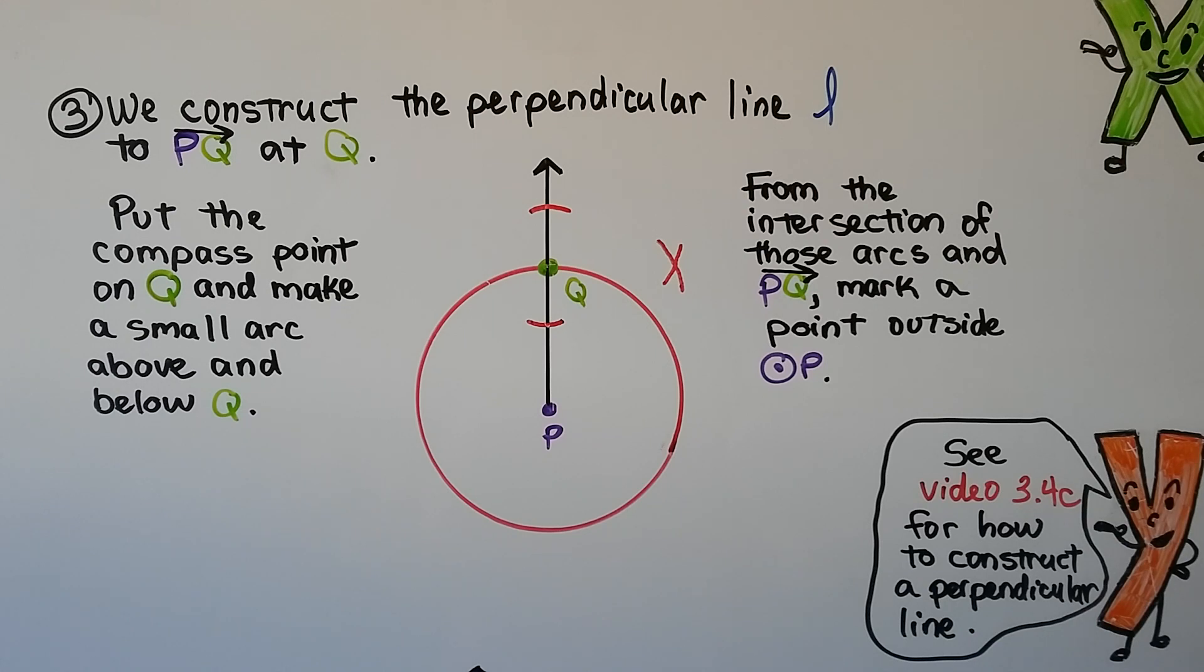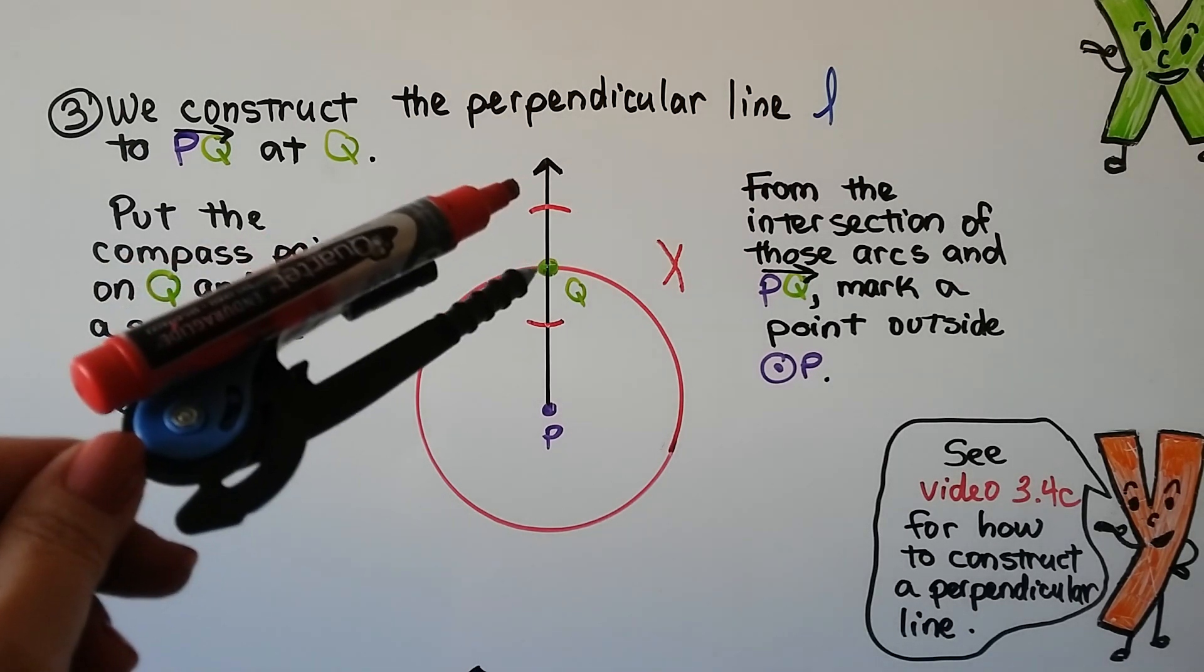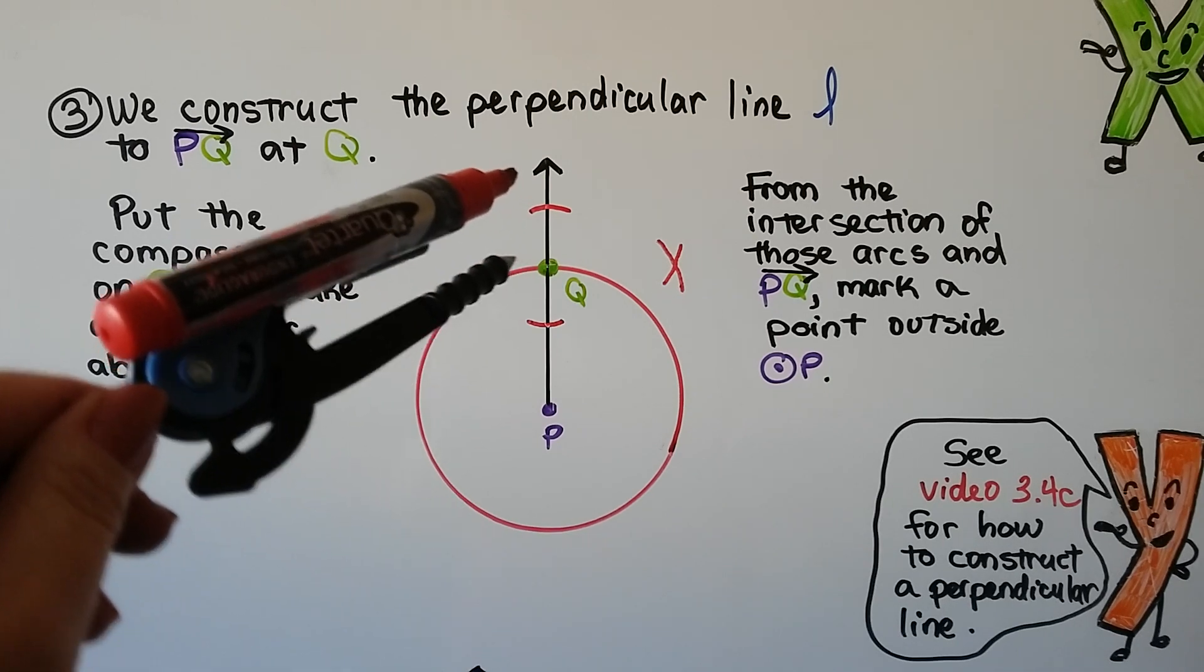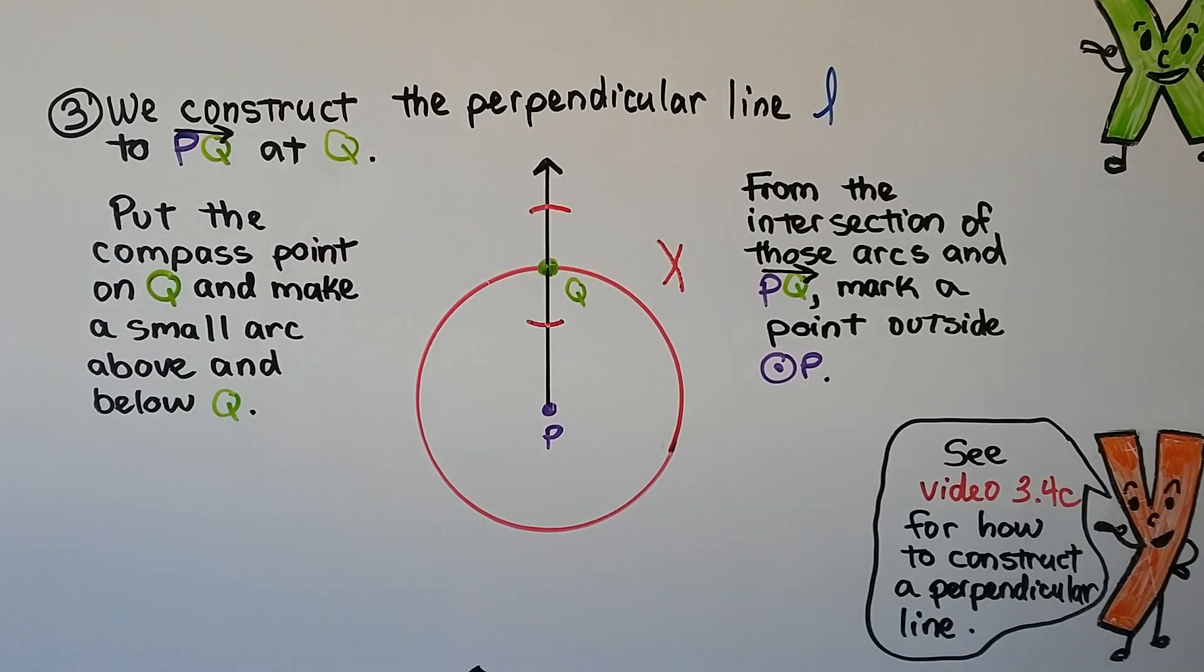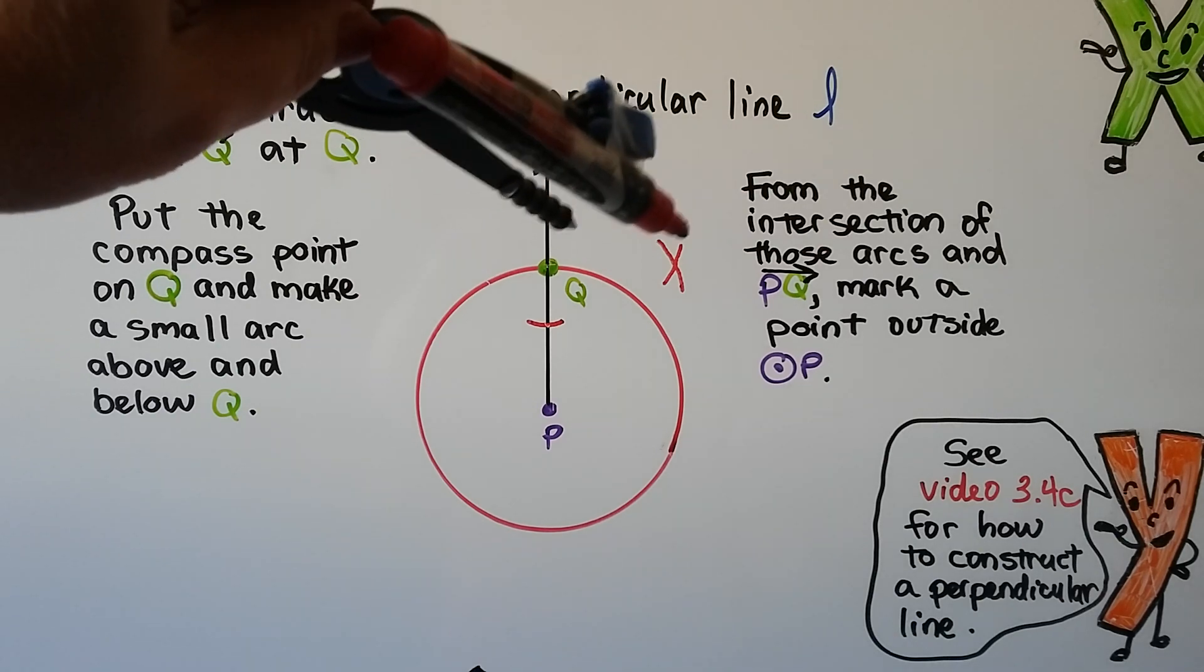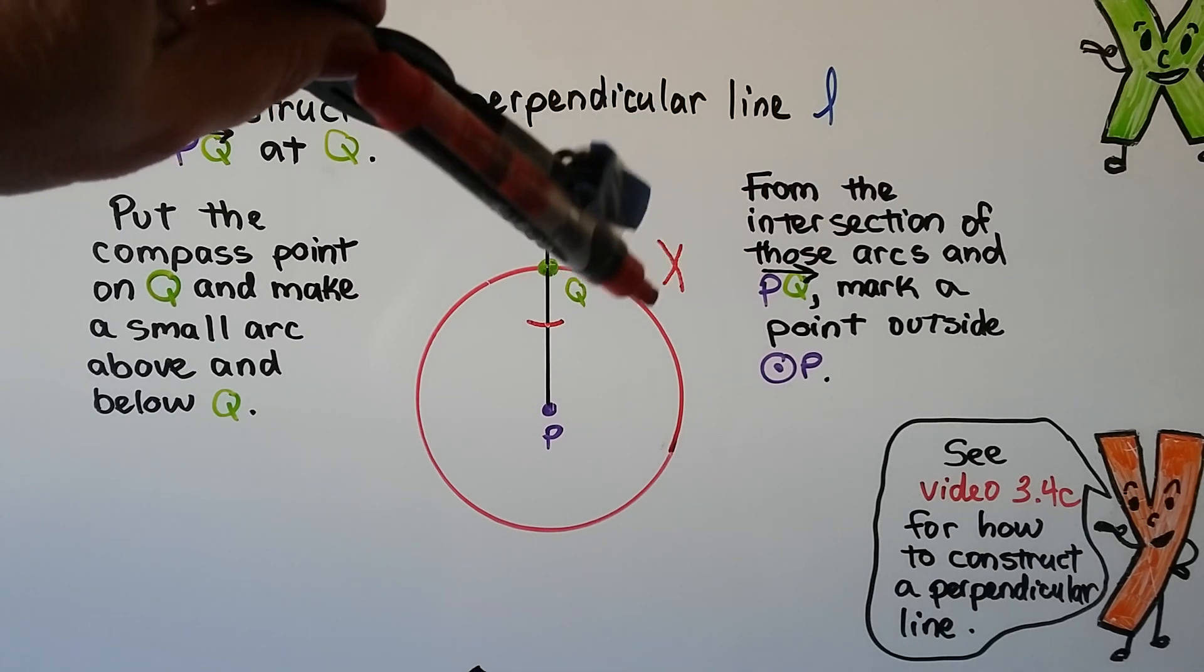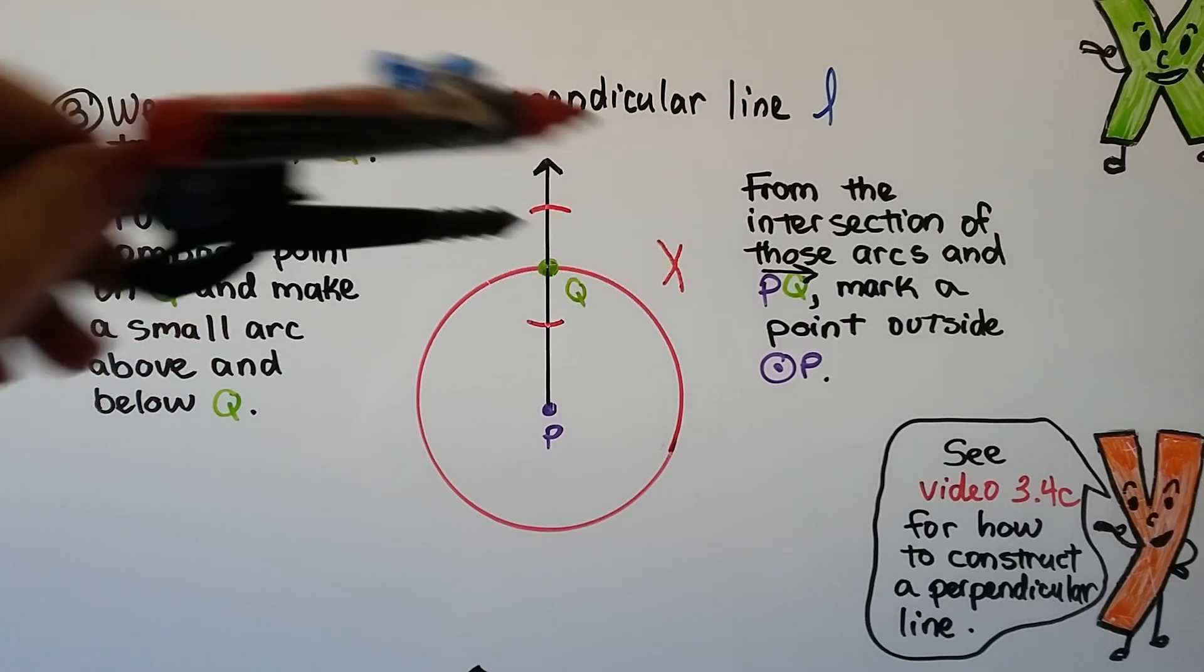The third thing we do is construct the perpendicular line L to ray PQ at Q. The way we do this is we put the compass point on Q and make a little arc. Keeping it at the same setting, we make another little arc below it. And from the intersection of those arcs and ray PQ, we're going to make a little arc here outside of circle P, and another little arc like that.